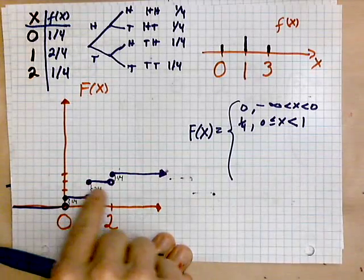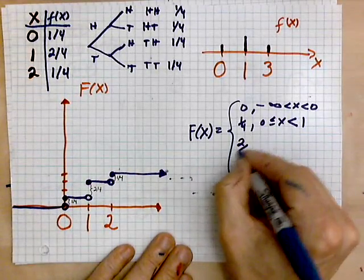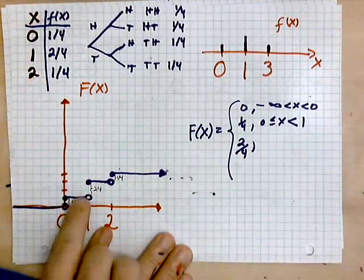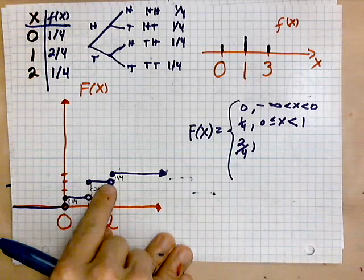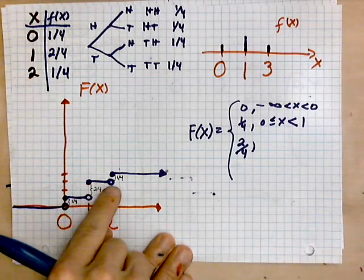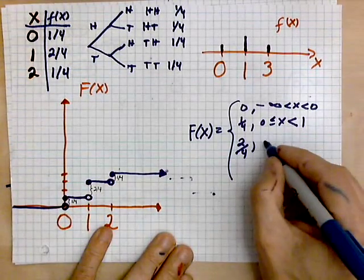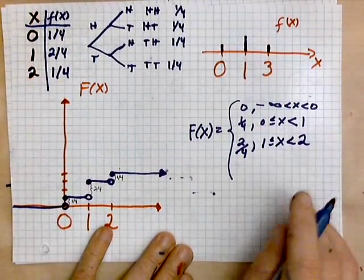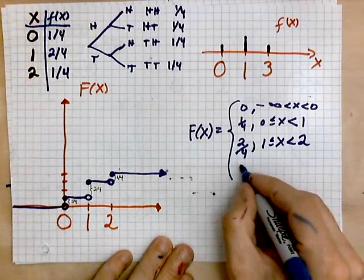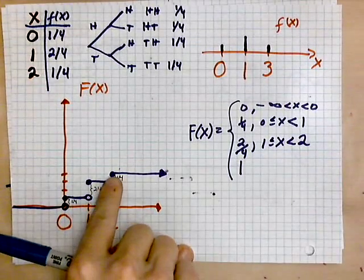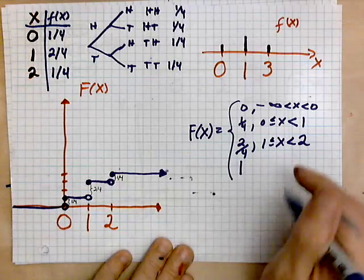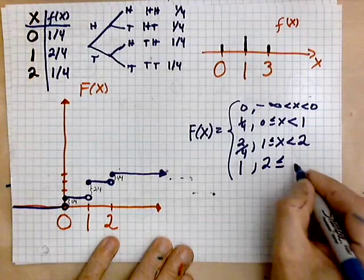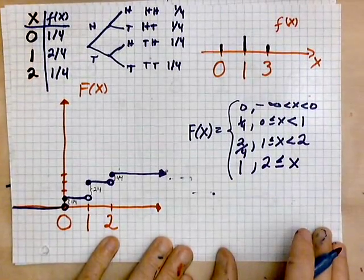So then you write zero is less than x, which is less than one exclusively. It does not include one. Then you see the next one is two fourths. So two out of four. And this holds between one and two. It includes the one, but it excludes the two. And lastly, after the two, you see that it's one always. So in this case, you can write that two is less than or equal to x.